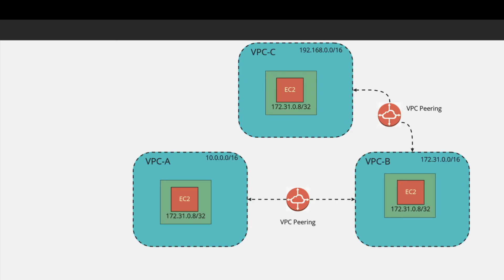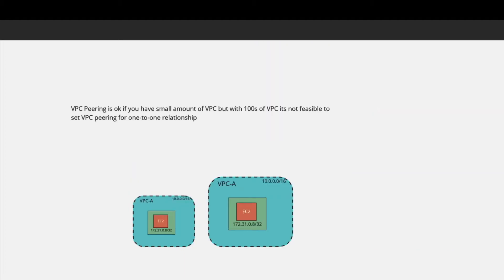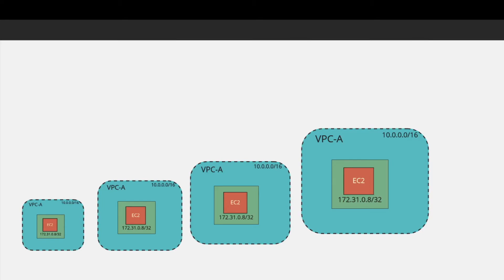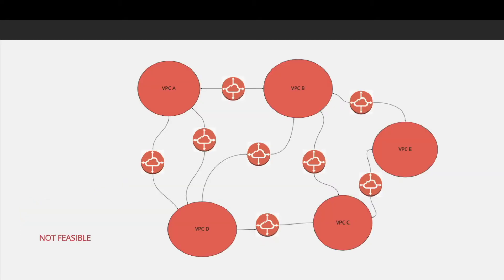What if you have more than two VPCs? You can establish as many one-to-one VPC pairings as you want. But remember, VPC peering is non-transitive. By that I mean, if VPC A is connected to VPC B and VPC B is connected to VPC C, it does not mean VPC A can talk to VPC C. You need to establish its own one-to-one VPC peering between A and C. VPC peering is okay if you have a small number of VPCs, but if you have hundreds or thousands, it's not feasible.